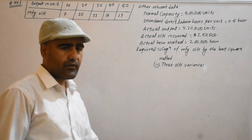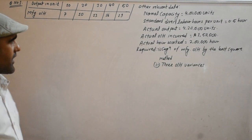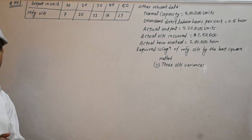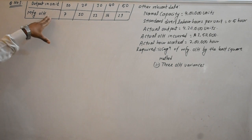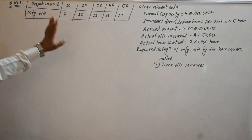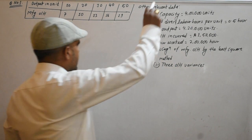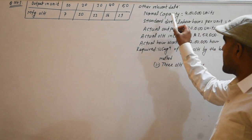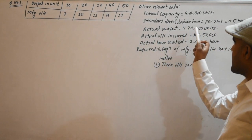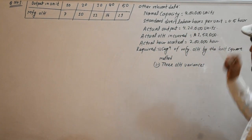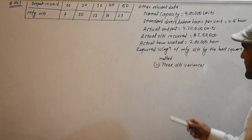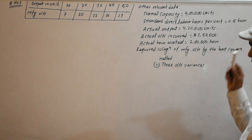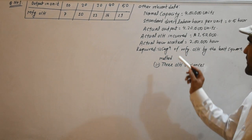This is the most important question — MPS is the most important question. This is the output in manufacturing. There is other relevant data: we have a normal capacity, a standard direct labor hours per unit, an actual output, and actual overhead. Required: one hour.